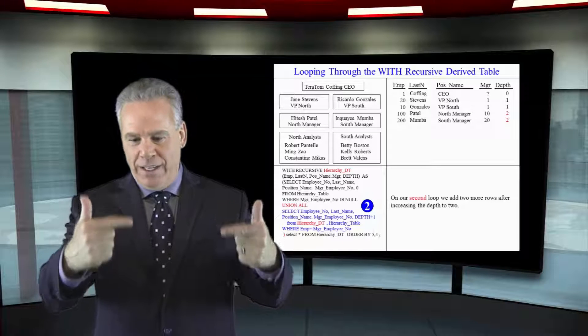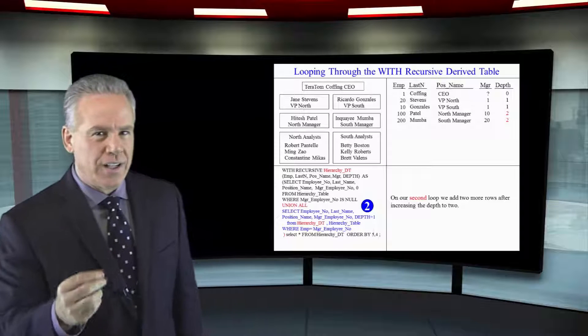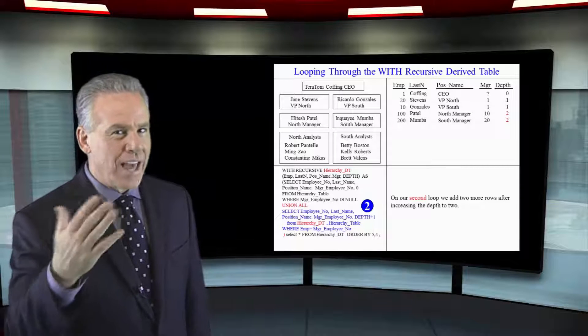Anytime it does the looping, when it gets done with that original loop, Teradata says, did we add any rows that time to the derived table? And when it says yeah, we added a couple,